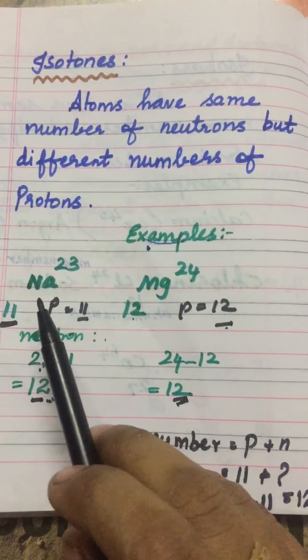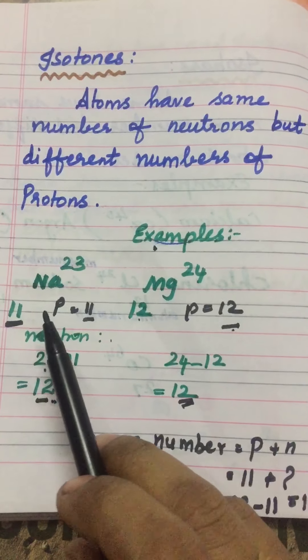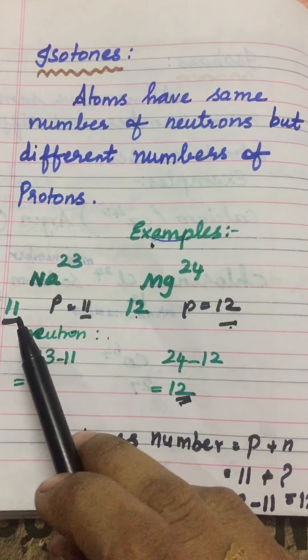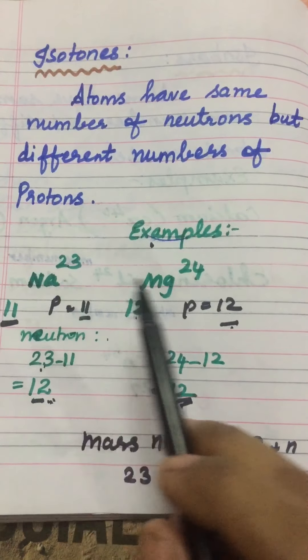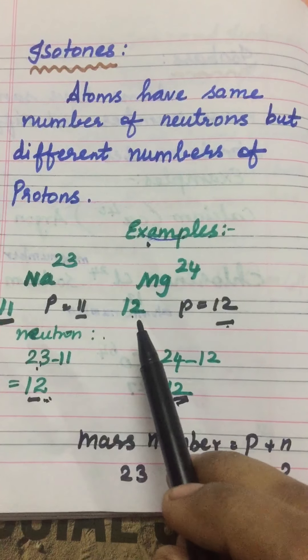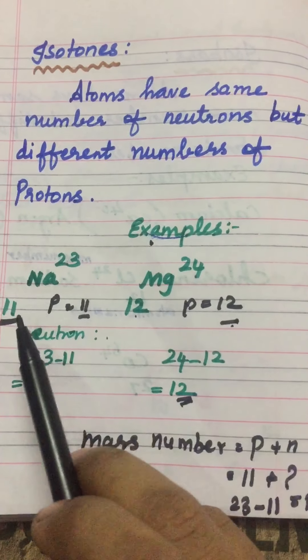Example: sodium and magnesium. Sodium atomic number is 11, mass number 23. Magnesium atomic number is 12, mass number is 24.